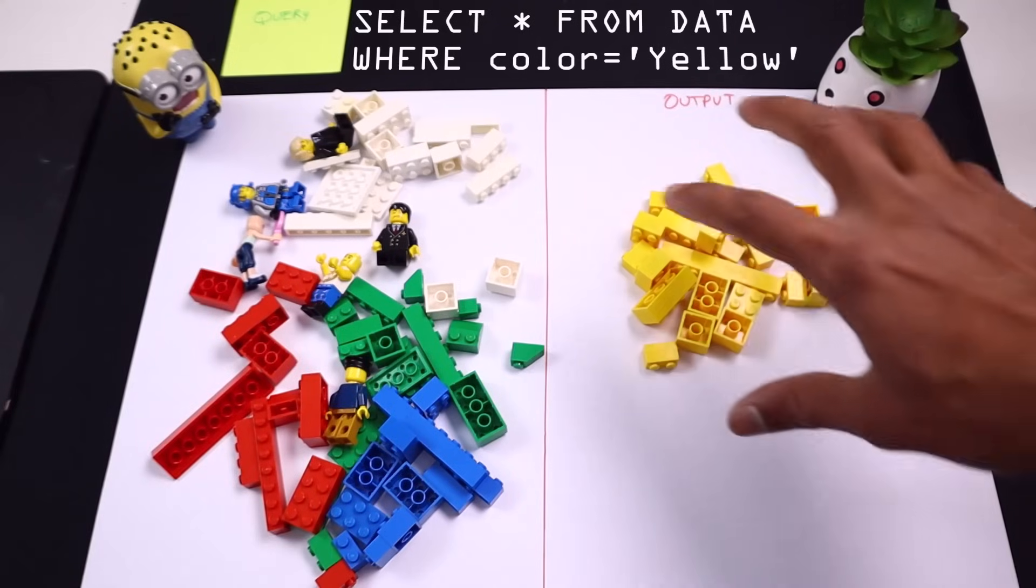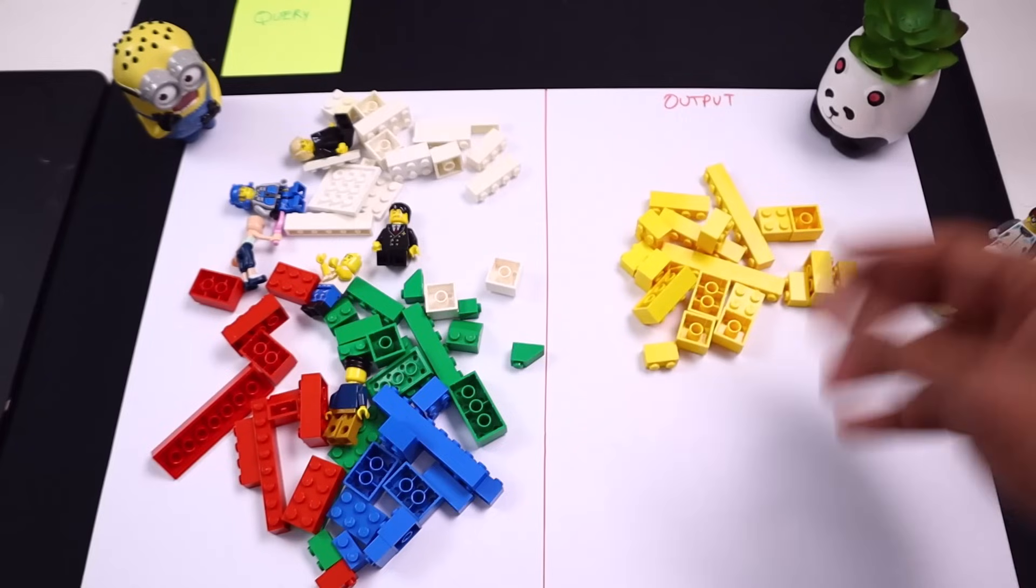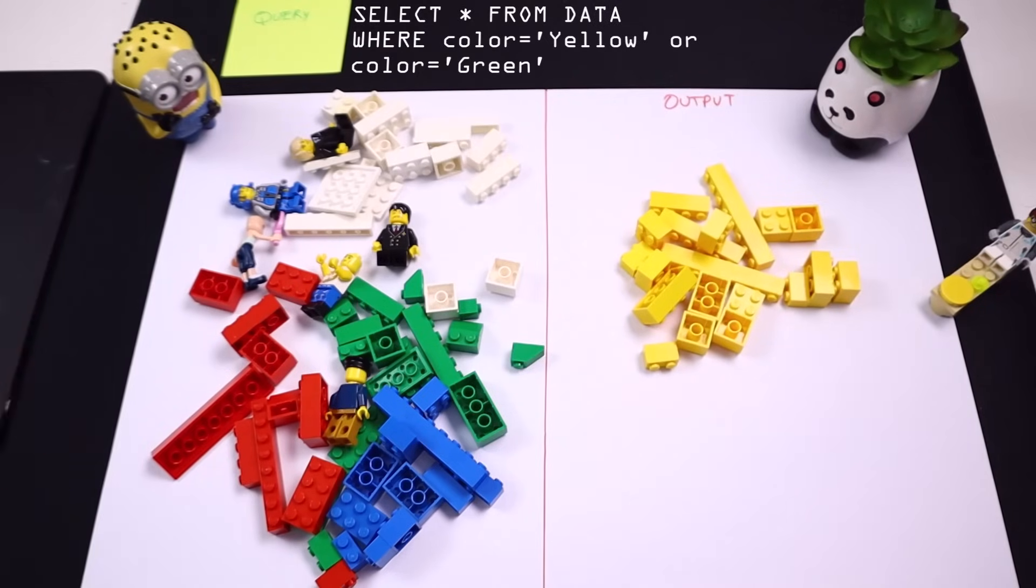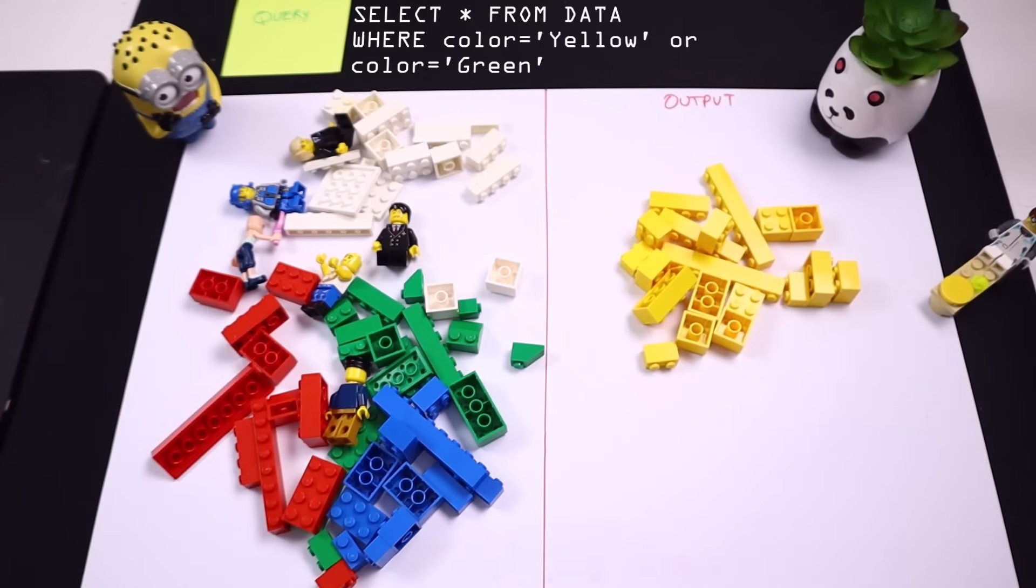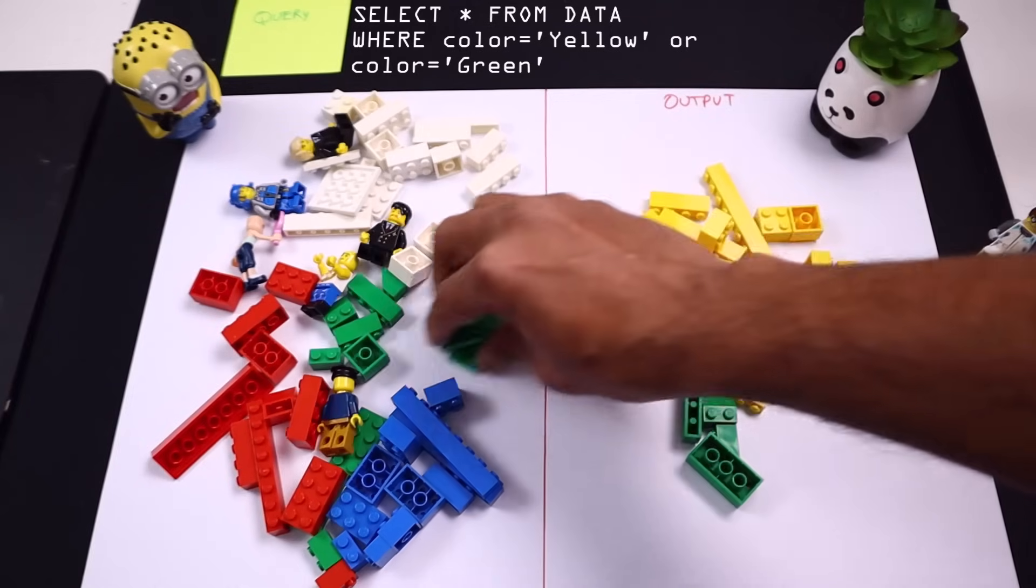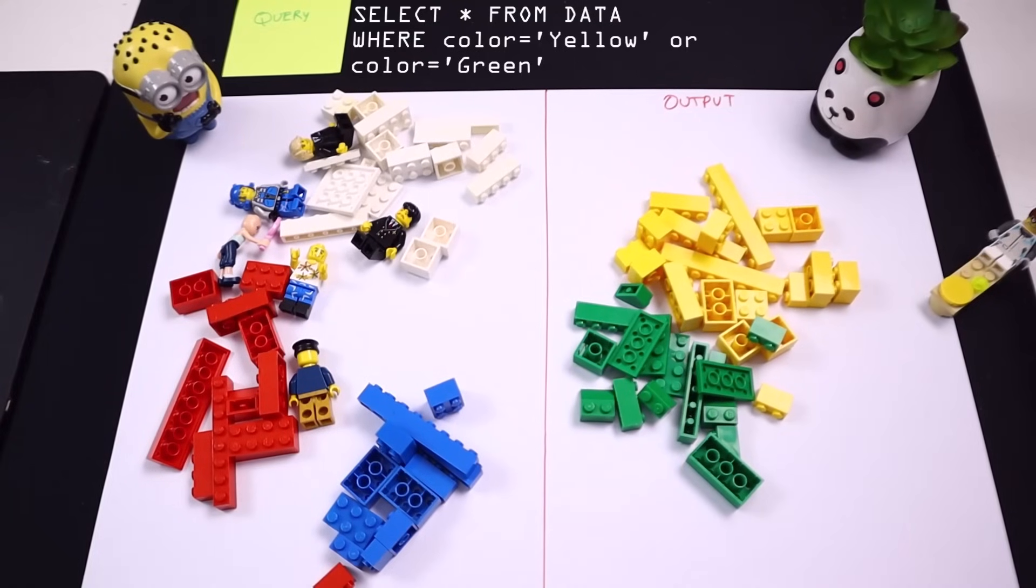Let's say we are not just looking for yellow, but we want to see yellow or green. So we could write a query that says select star from data where color is equal to yellow or color is equal to green. So the output for that would look like this.